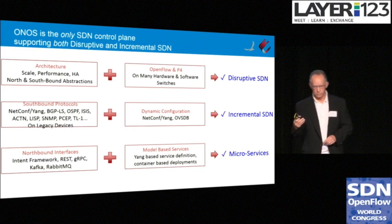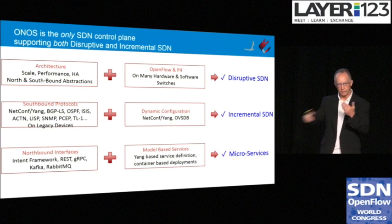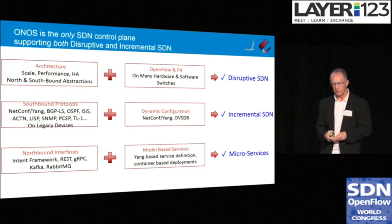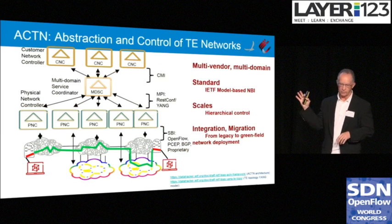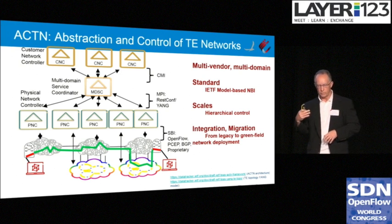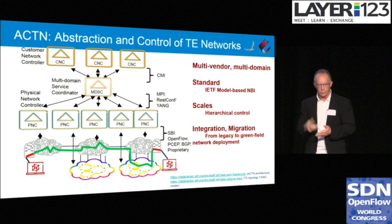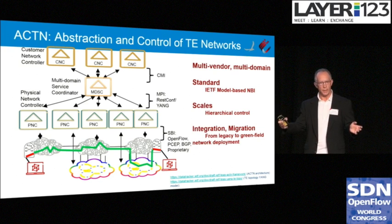Being able to provide model-based services — whether through TOSCA or Yang — gives operators the ease of defining a service and having that create a model, or taking a standard model and feeding that in so the right things can be done in the network. Today there exist a number of traffic-engineered networks that may be disparate, and you need a way to manage those as one. There's a standard way to do that called Abstraction and Control of TE Networks from IETF. The importance of a solution like this is it's multi-vendor, multi-domain, a standard — it scales, helps you add in different domains and operate them as one, and gives you a migration mechanism.